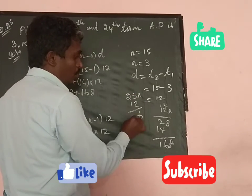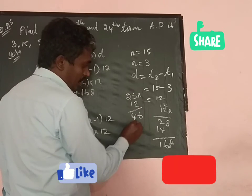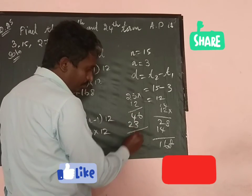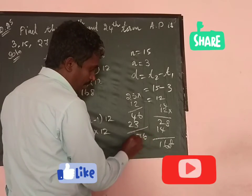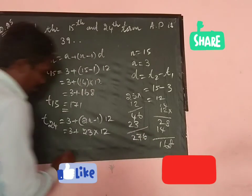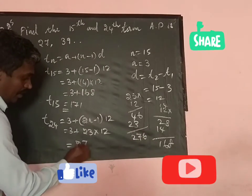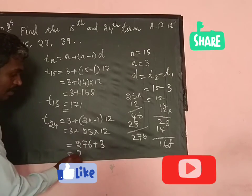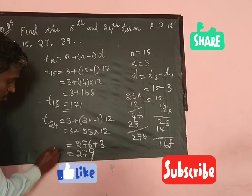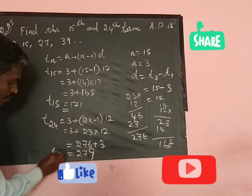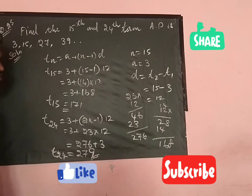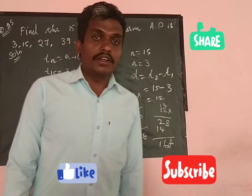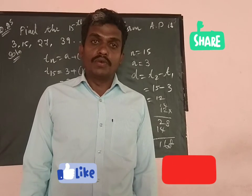23 × 12 = 276. So t24 = 276 + 3 = 279. The 24th term is equal to 279. Thank you.